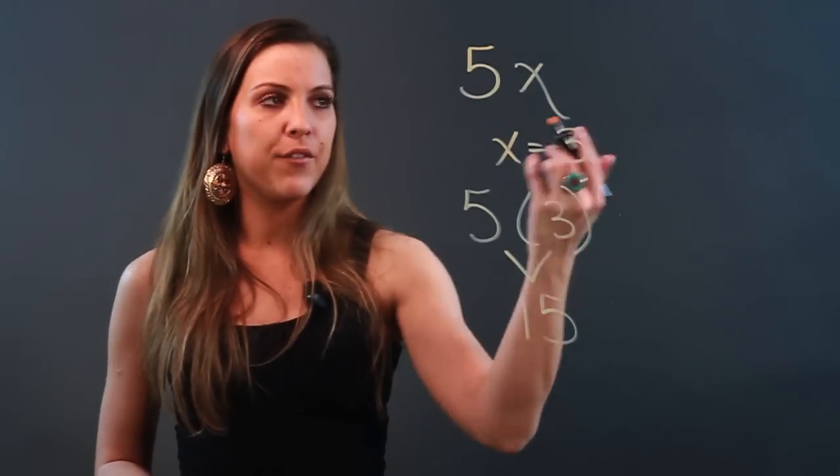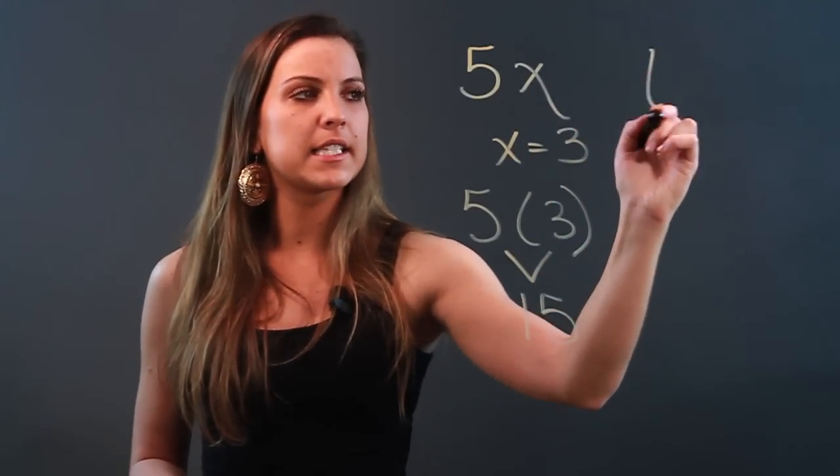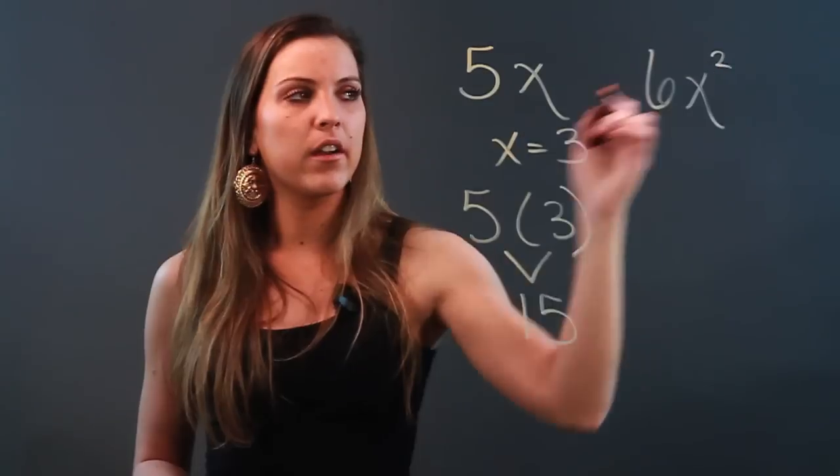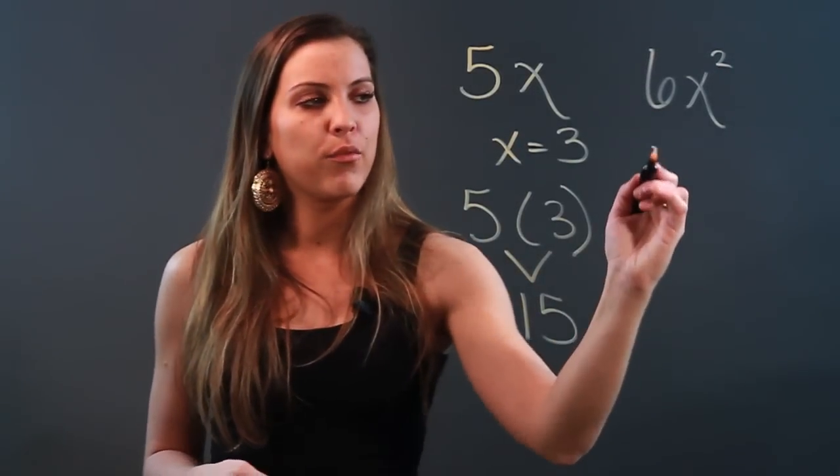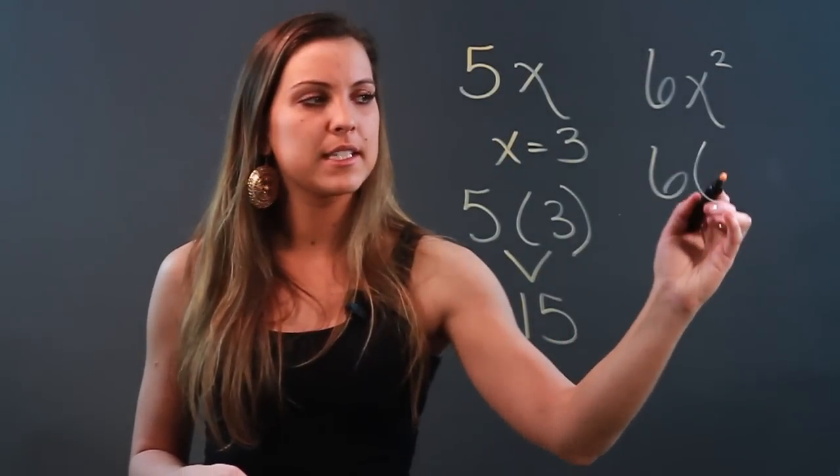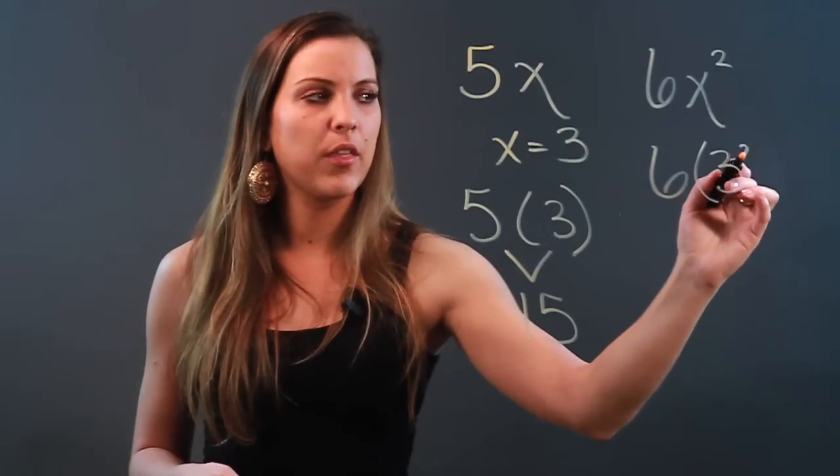Okay? If I had something a little more complicated like 6x squared and I was told that x was equal to 3, I'm going to write my coefficient. I'm going to replace x with 3 and keep the little square.